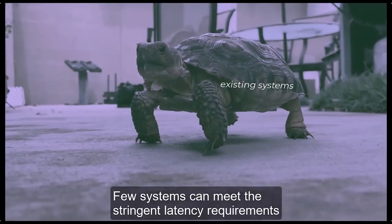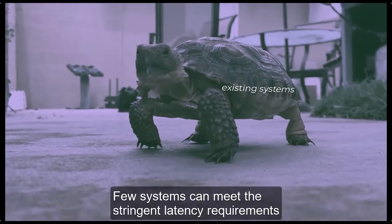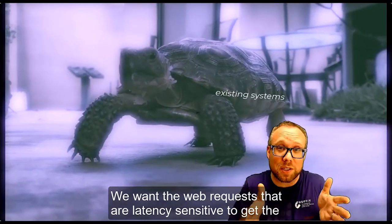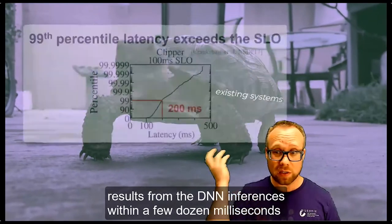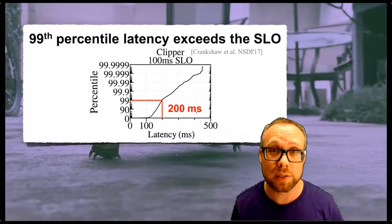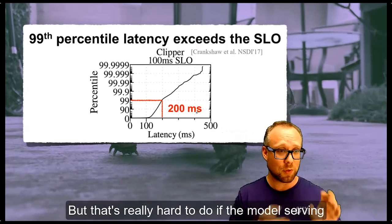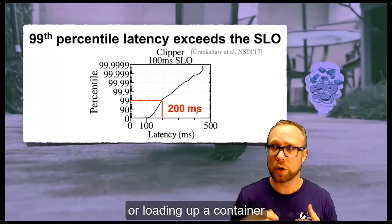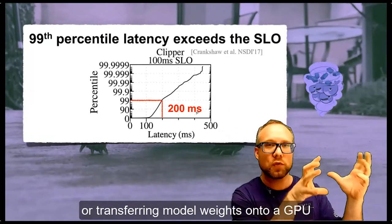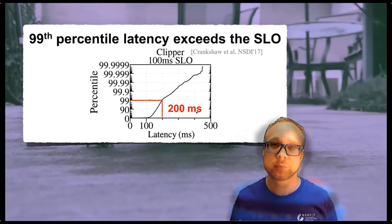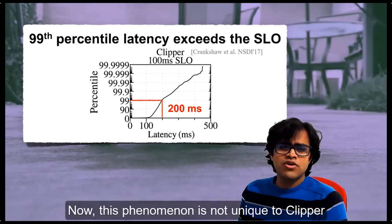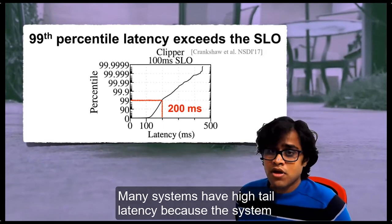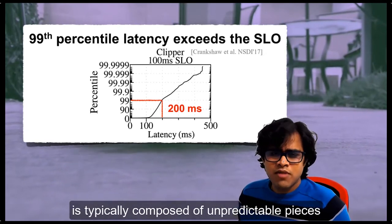Few systems can meet the stringent latency requirements. We want web requests that are latency sensitive to get results from DNN inferences within a few dozen milliseconds. But that's really hard to do if model serving systems are spending most of their time booting up a VM, loading up a container, or transferring model weights onto a GPU. This phenomenon is not unique to Clipper or model serving systems. Many systems have high tail latency because they are typically composed of unpredictable pieces.